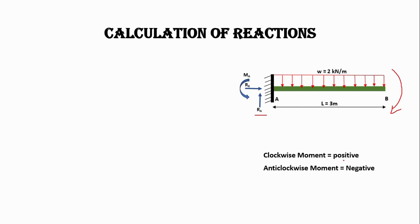The assumptions are: anti-clockwise moment taken as negative and clockwise moment taken as positive. First, calculate the horizontal forces. In this case we do not have any horizontal force acting on this beam, so the sum of all forces in the horizontal direction will be zero — meaning our Rx reaction will be zero.